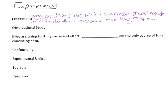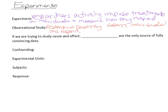An observational study occurs when researchers passively observe their subjects and measure variables. For example, studies show that people who smoke tend to be more susceptible to heart disease. Researchers don't force people to smoke — they ask about lifestyle habits and check for heart disease. That would be an observational study.